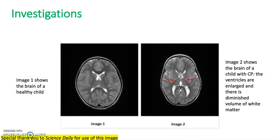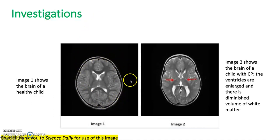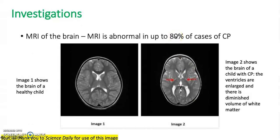As you can see from these brain scans, image one shows the brain of a healthy child. Image two shows the brain of a child with cerebral palsy — the ventricles are enlarged and there is diminished volume of white matter. The MRI is abnormal in up to 80% of cases of cerebral palsy.